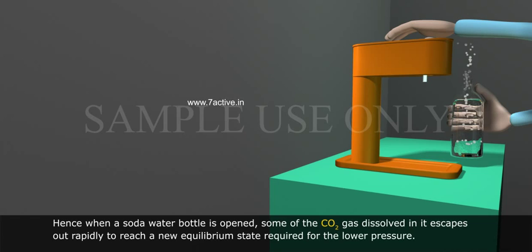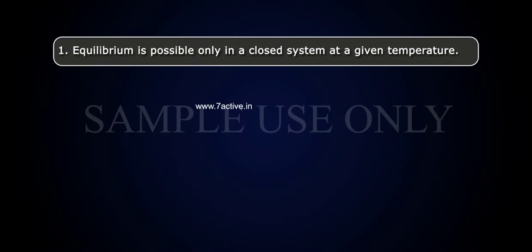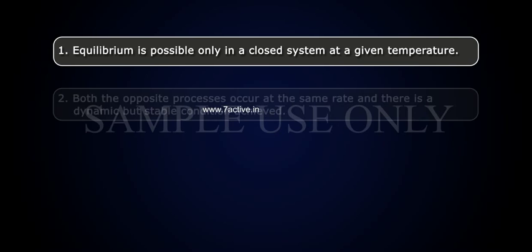General characteristics of equilibrium involving physical process. 1. Equilibrium is possible only in a closed system at a given temperature. 2. Both the opposite processes occur at the same rate and there is a dynamic but stable condition achieved.